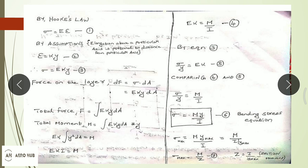Note that area moment of inertia is the resistance of a section to bending, while mass moment of inertia is resistance to rotation. From the bending stress equation, σ_max = M·y_max/I. The term I/y_max is called the section modulus Z. So σ_max = M/Z. When selecting a section for bending, we need a section with a higher section modulus to resist the bending moment.